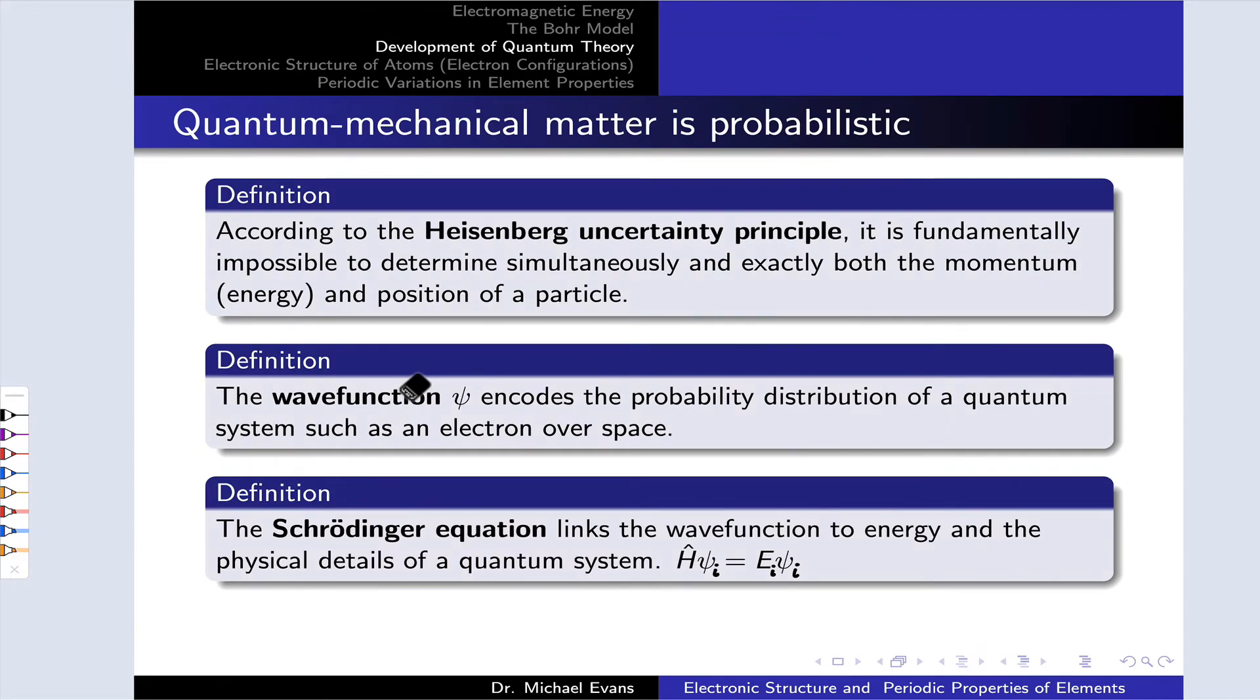Now, three more key concepts from quantum mechanics that we need to understand the quantum model of electrons and atoms. The first is called the Heisenberg uncertainty principle. This is the idea that uncertainty in position and momentum and other pairs of related experimental variables are inversely related. So it's impossible for us to exactly know the momentum and position of a particle, such as an electron within an atom.